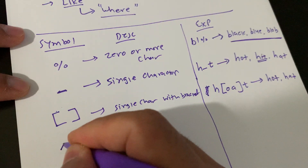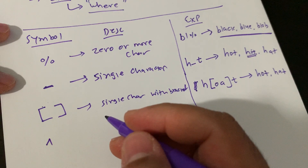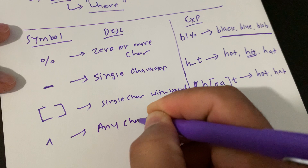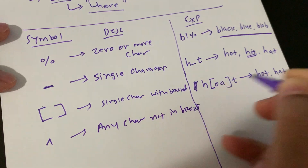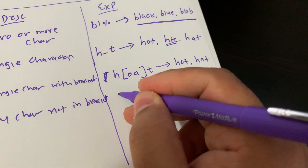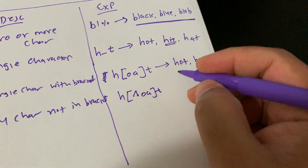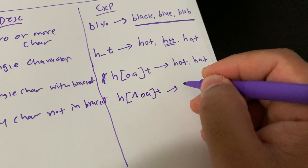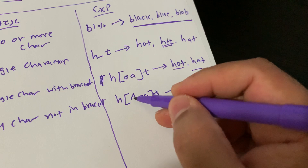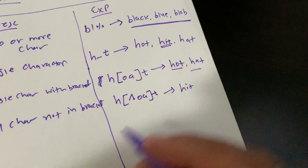The caret symbol inside brackets ([^]) represents any character NOT in the bracket. For example, H[^OA]T means it will find 'hit' but not 'hot' or 'hat', because O and A are excluded from the result.